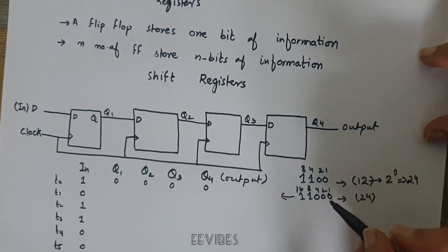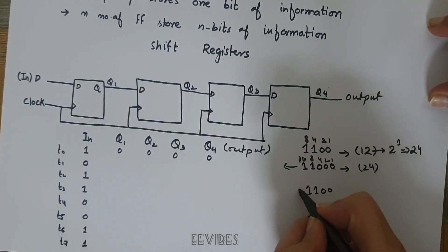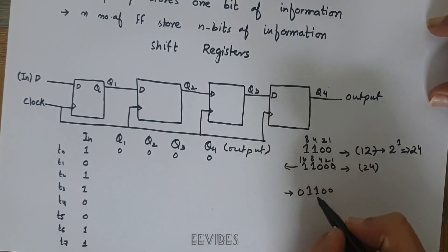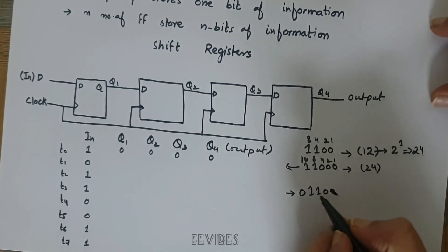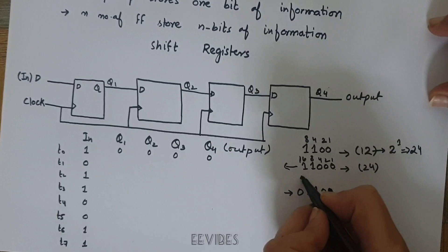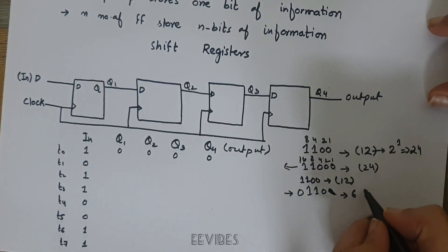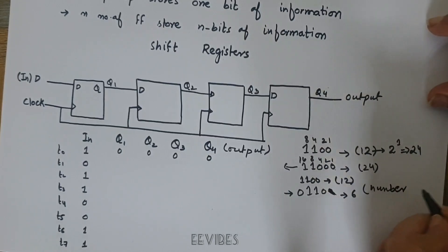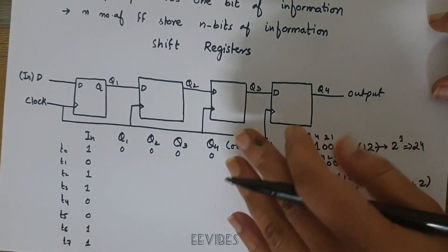Similarly, if you shift the number 1 1 0 0 towards the right, the trailing 0 will be discarded and a 0 is placed at the MSB position. The pattern whose decimal equivalent was 12 now gives us the value 6, which means a right shift is equivalent to division by 2. So the number is divided by 2 when performing a right shift.